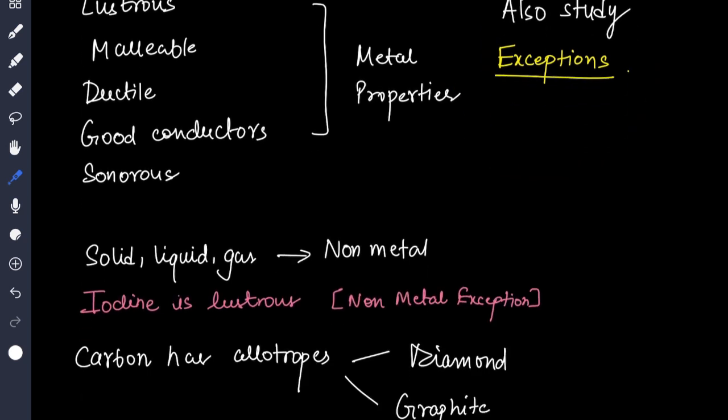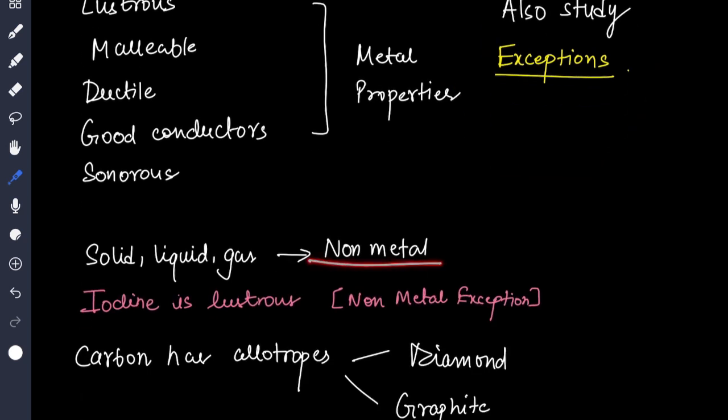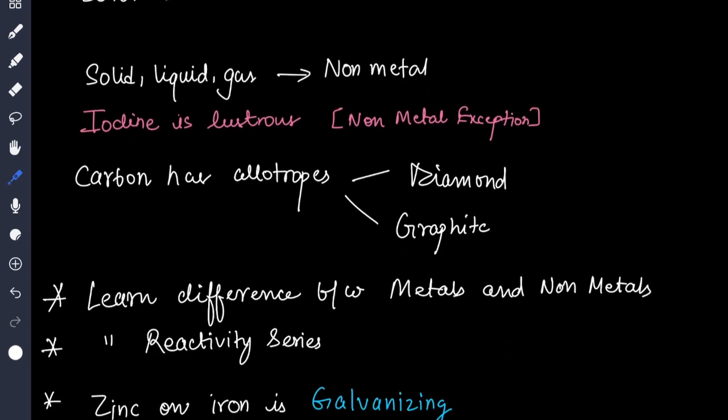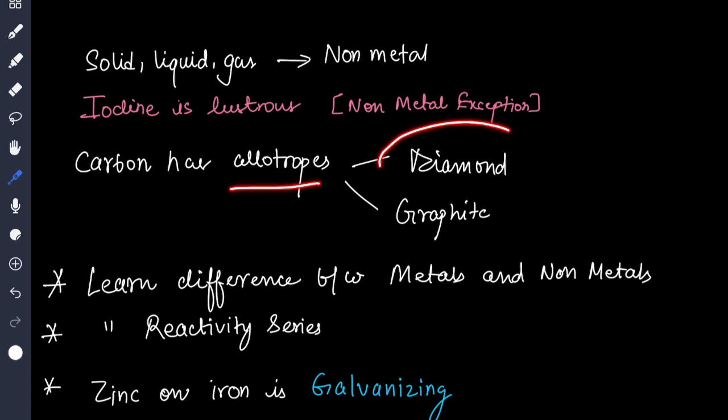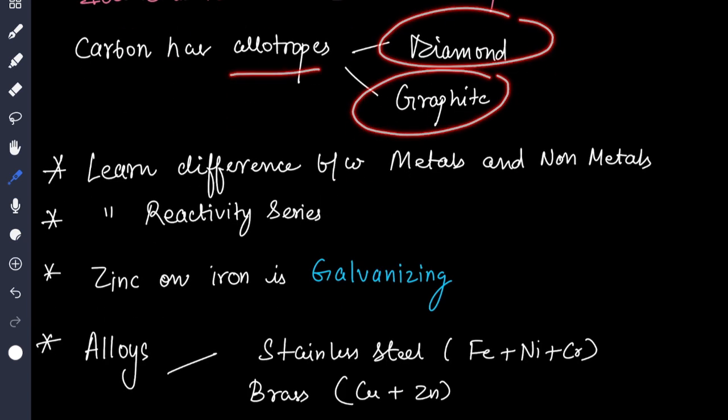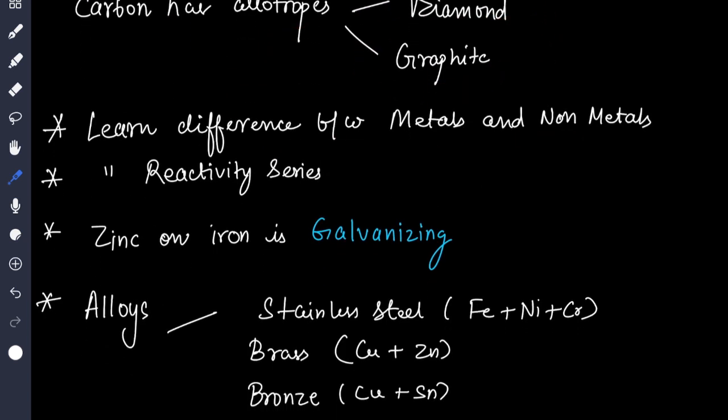Non-metals can be in solid, liquid or gaseous state. Iodine is lustrous even though it is a non-metal, this is an exception. Carbon has allotropes: diamond, graphite. Then learn difference between metals and non-metals, also the reactivity series.